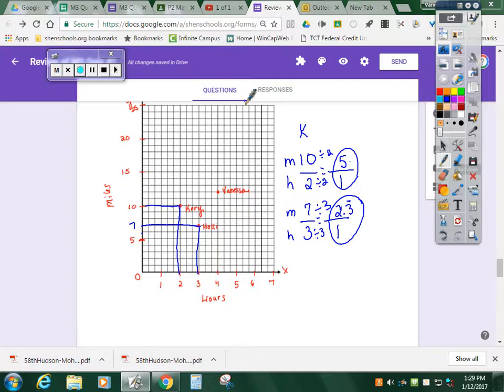Last but not least, Vanessa. Vanessa can run 12 miles in four hours. I'm also going to scale that down to a unit rate of one. It looks like Vanessa can run three miles per hour.